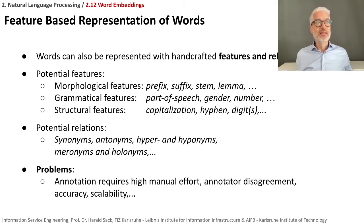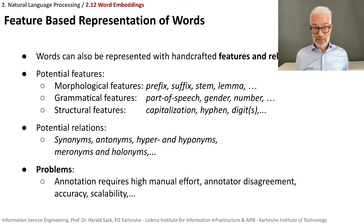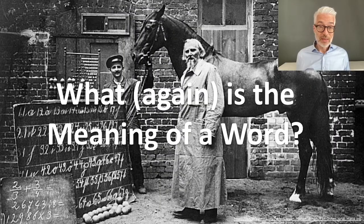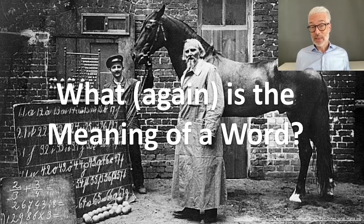So those were our approaches: one traditional integer encoding, one vector space one-hot encoding, and feature-based encoding. Is there another way to better represent words? One of the important issues is that the meaning of a word should somehow be represented in the computer. For that, let us focus again on the question: what is the meaning of a specific word?